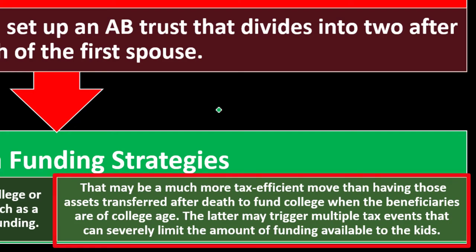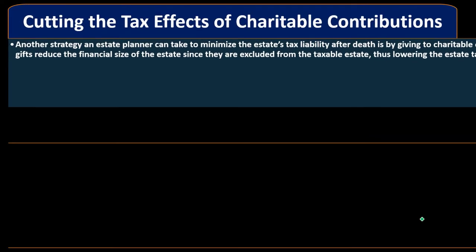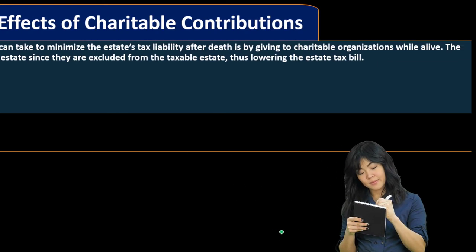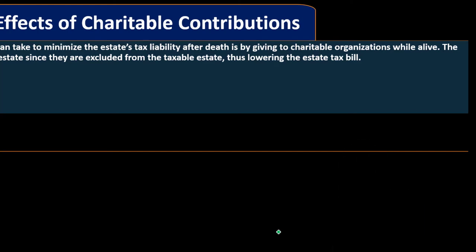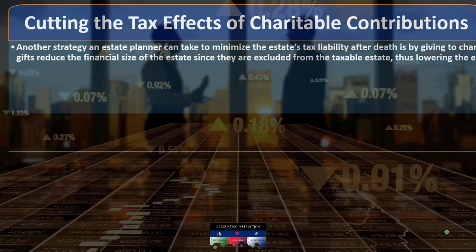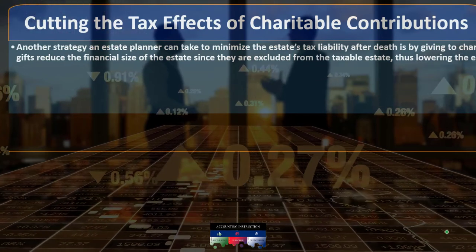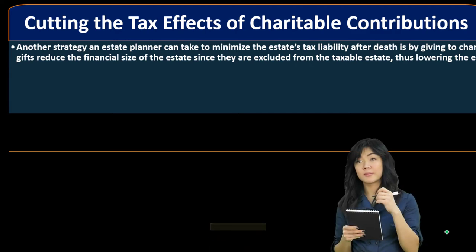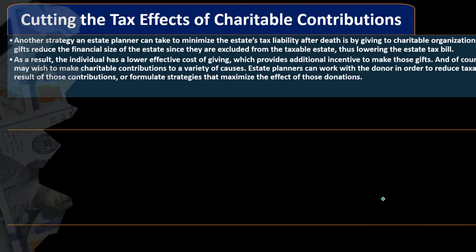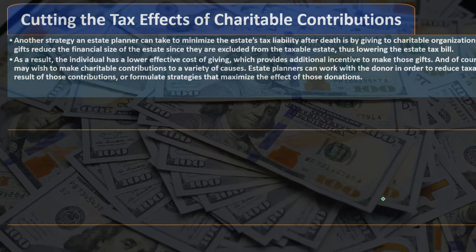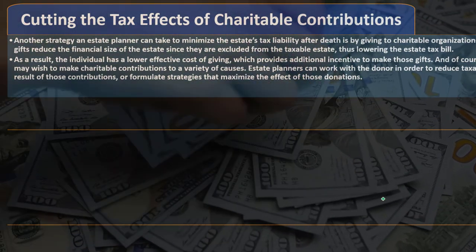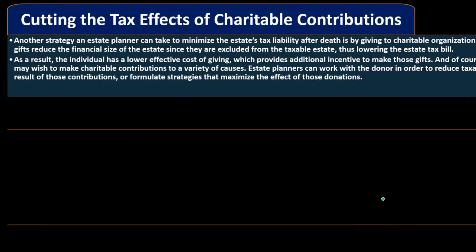Those multiple tax events can severely limit funding available to the kids. Another strategy — cutting tax effects on charitable contributions — involves giving to charitable organizations while alive. Gifts reduce the financial size of the estate since they are excluded from the taxable estate, lowering the estate tax bill. You can generally give more to charities than to relatives under gifting rules.